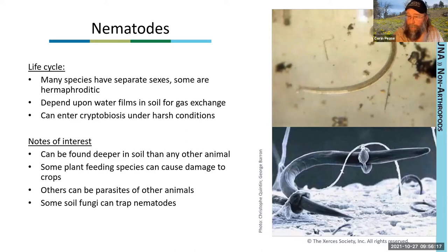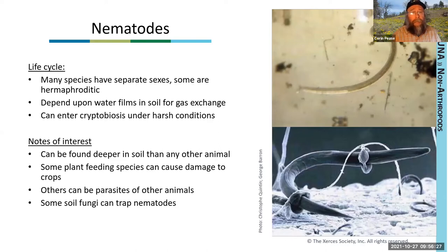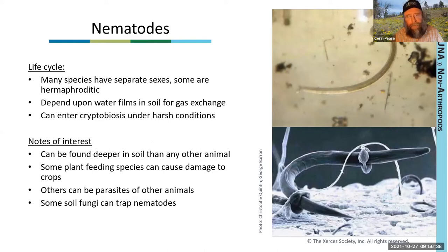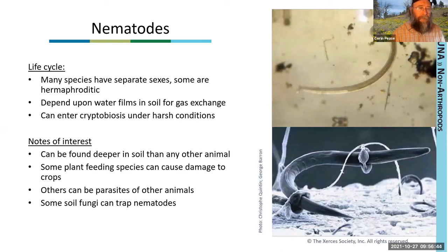Soil nematodes can also be indicators of soil quality. Their presence correlates with nitrogen cycling and plant growth, and they can be indicators of chemical and physical disturbances. If there are low numbers of nematodes, that can be an indicator of a very disturbed and unhealthy soil.